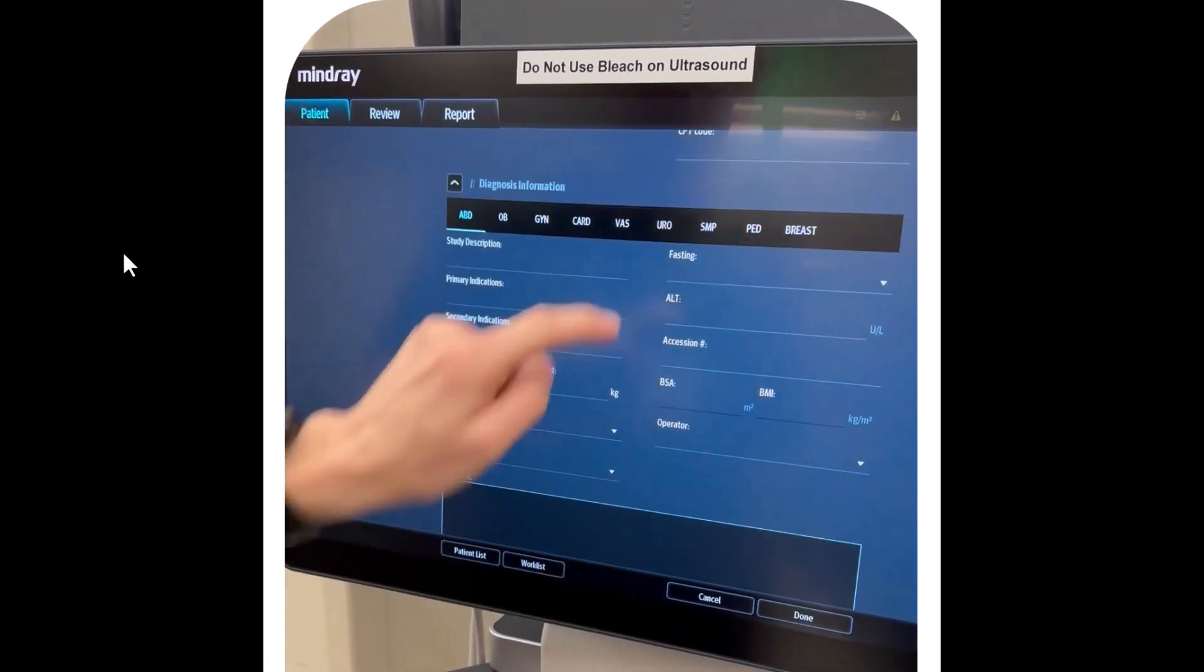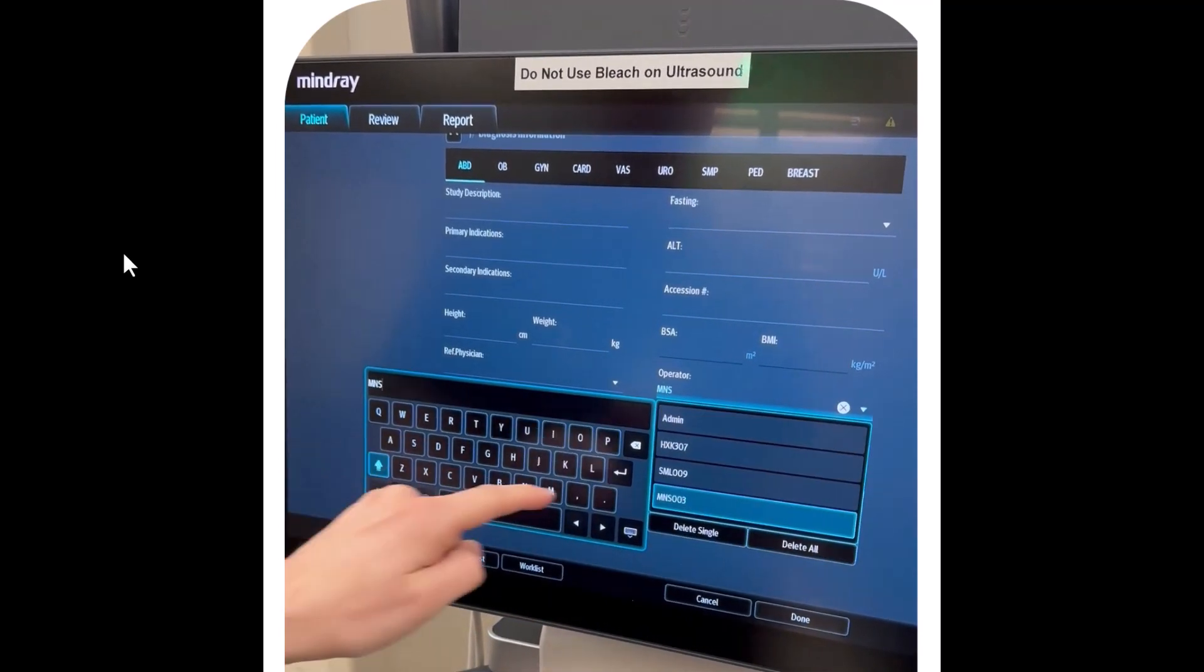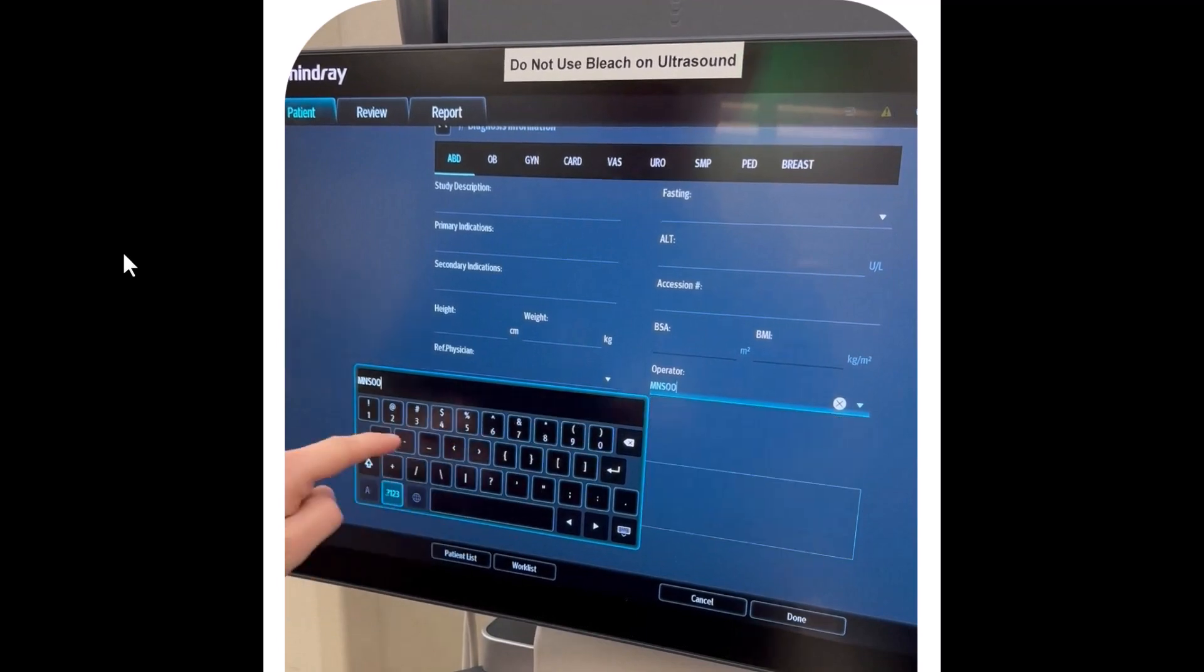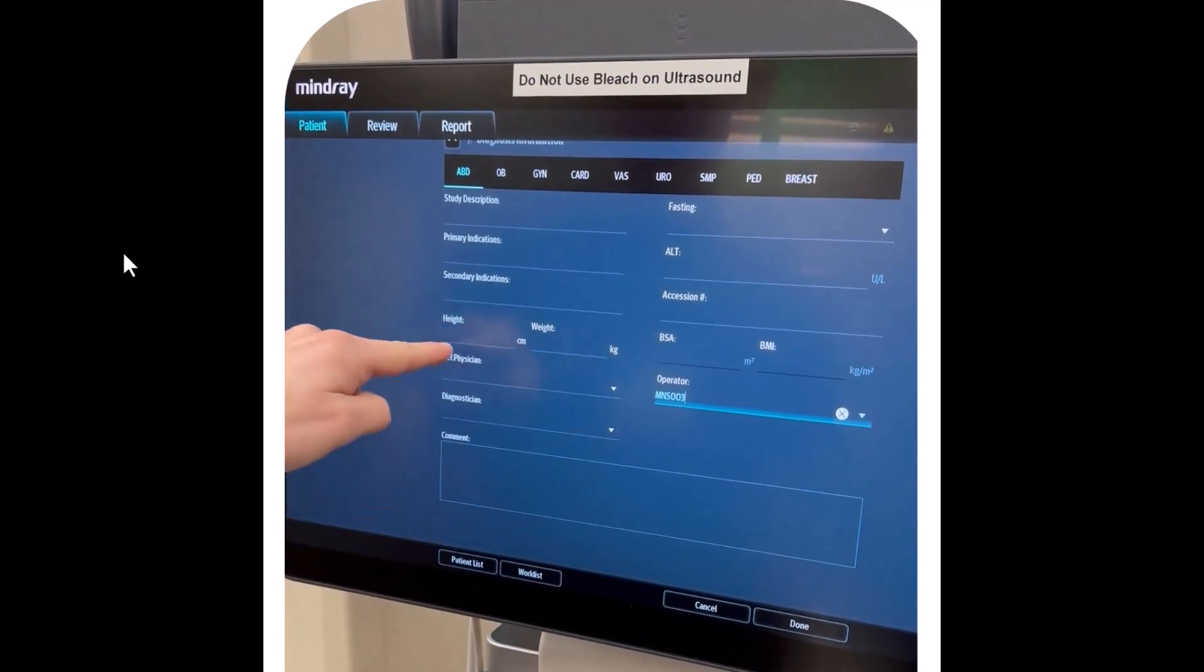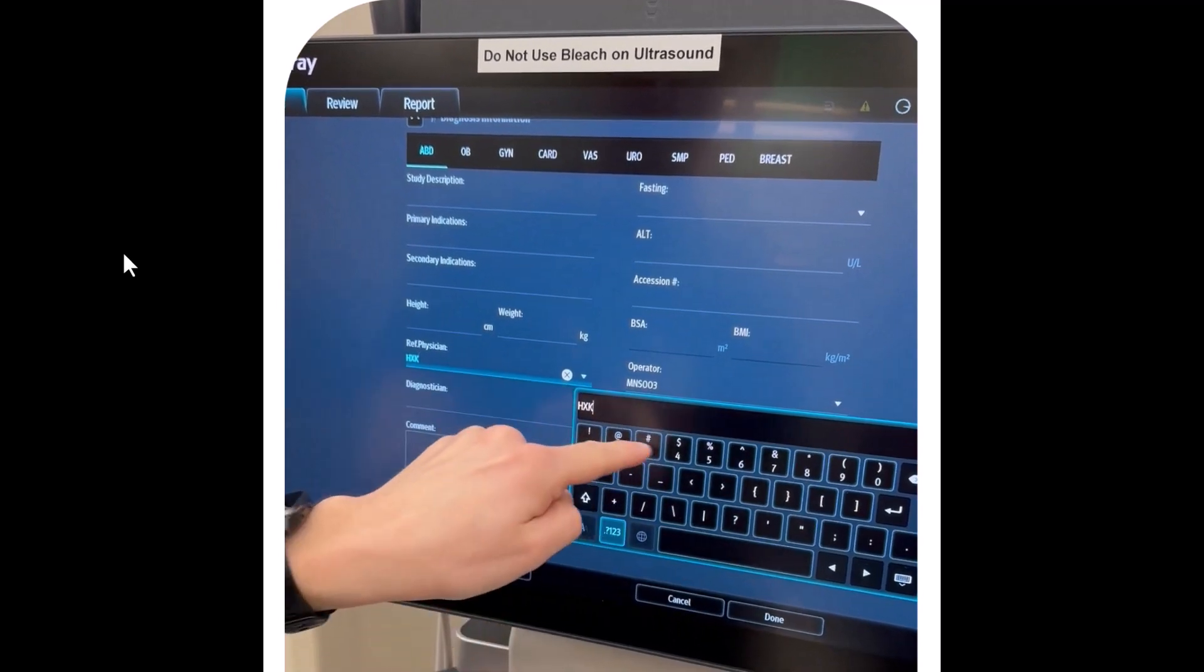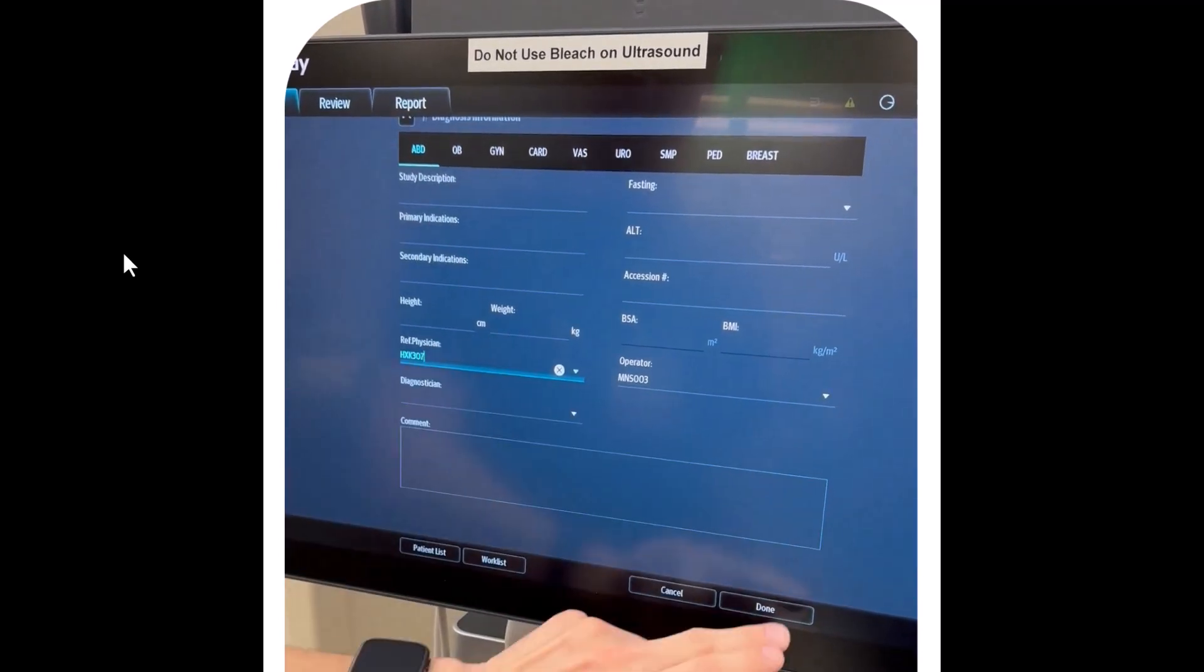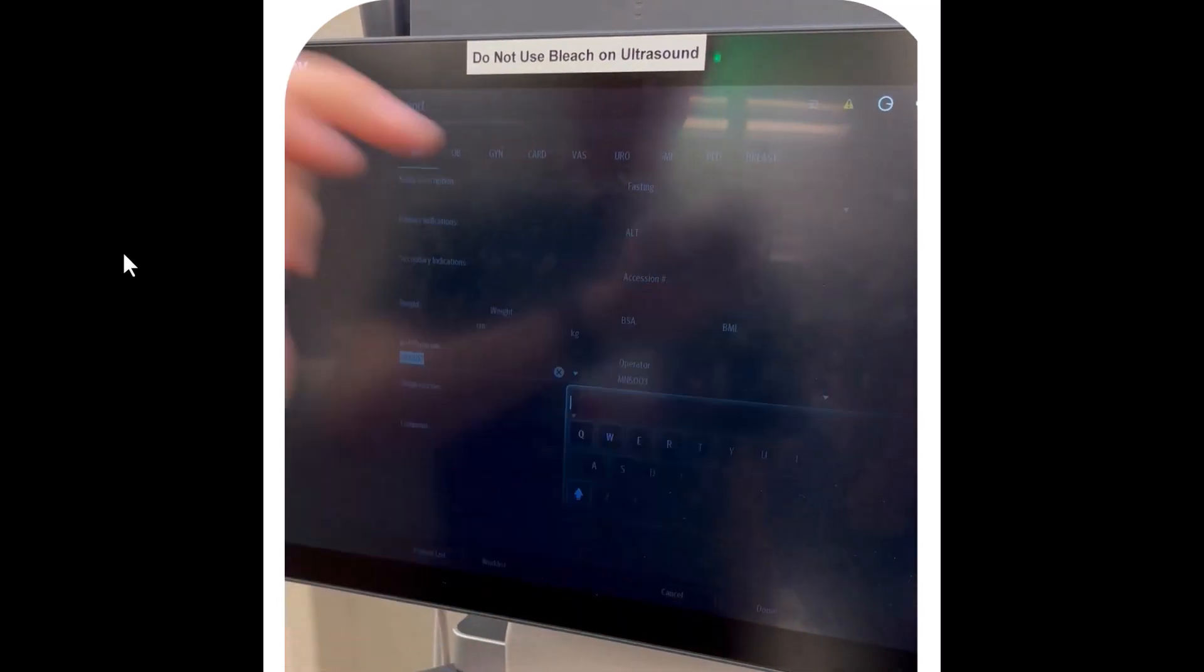Scrolling down, you'll see a few different options here, but your HealthLink ID is going to go under the operating user here, and if you're the one performing the scan, this is where your information will go in. The attending or the supervising user will go under the referring physician button here, and then when you're done, you're going to click done and say yes, you wish to change the patient information.